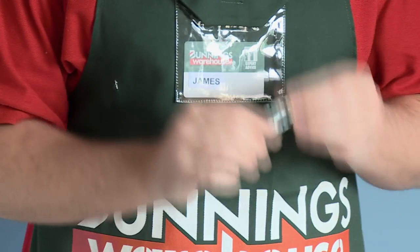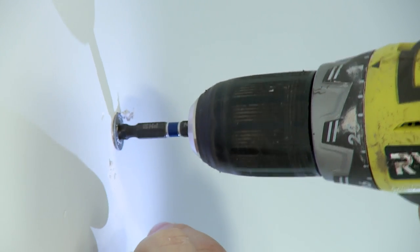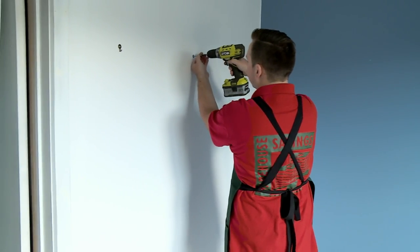This one here is the exact same thing. All it is, it goes directly into the wall. And then you go through and screw your screw in and your toggle will come out.